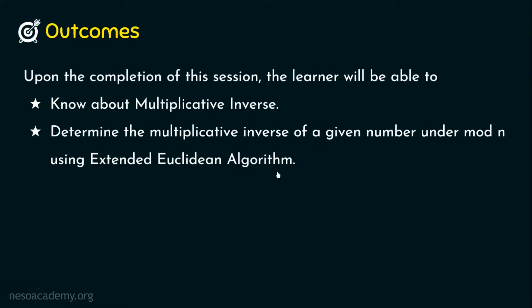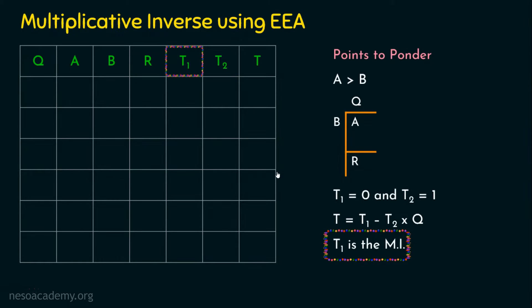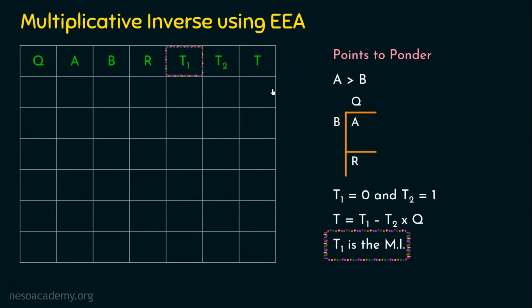We are going to apply the extended Euclidean algorithm, which has seven columns: Q, A, B, R — the four columns from Euclid's algorithm — plus three more columns T1, T2, and T. The biggest number is placed in A and the smallest in B. We perform A mod B to get a quotient and a remainder. In the first step, T1 and T2 are initialized to 0 and 1 respectively, and T is computed as T = T1 minus T2 times Q. The algorithm runs until A mod B cannot be performed, at which point whatever is in T1 is the multiplicative inverse.